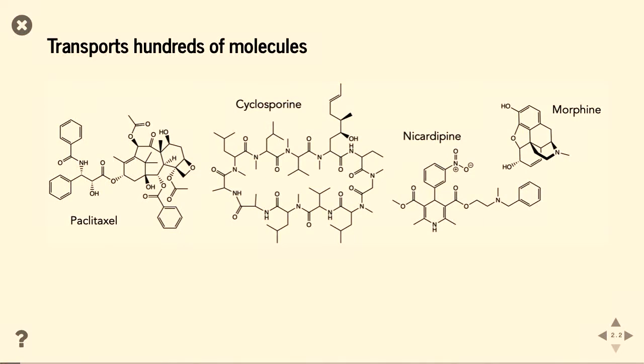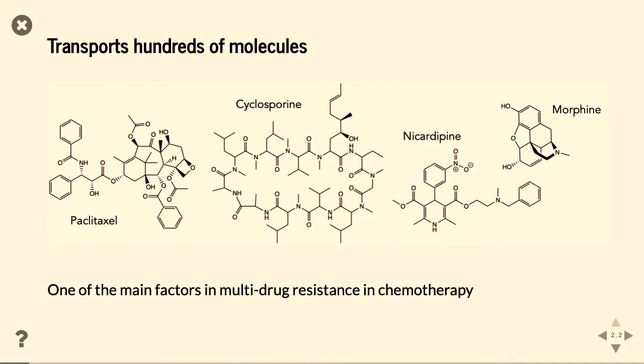It's really good at its job. So we know that PGP transports at least hundreds of molecules, some of which are shown here. But the problem is then some of those molecules we actually do want to be inside ourselves. So Paclitaxel, for example, is involved in chemotherapy, and we very much want it to do its job. So one of the main factors in multidrug resistance in chemotherapy is actually P-glycoprotein.